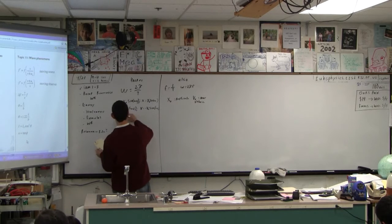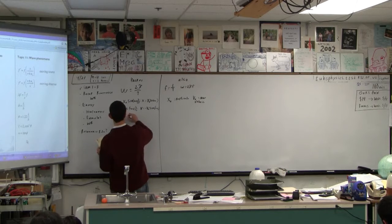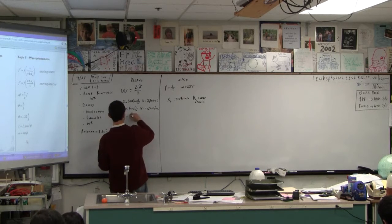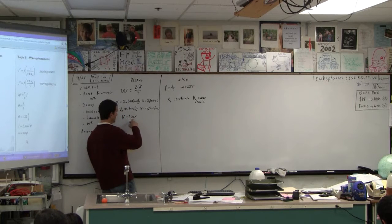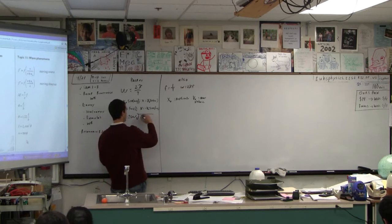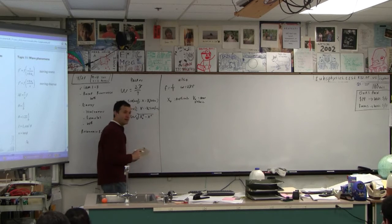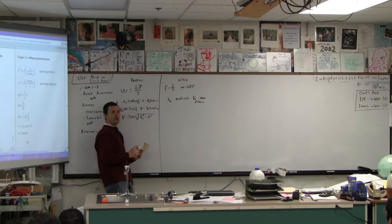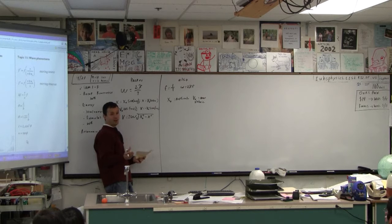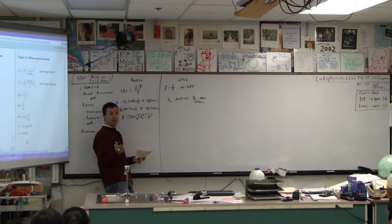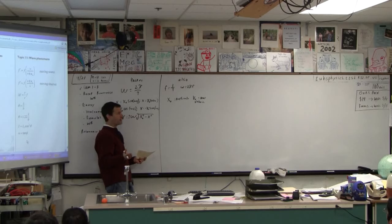And then the final thing we did last time was that the velocity at any given point is plus or minus omega times the square root of x₀² minus x². This is what Juliana was asking about. So then the question is, where does the maximum velocity occur? There's no formula for that - that would have been handy, but it's not there. So how do you get the maximum velocity?